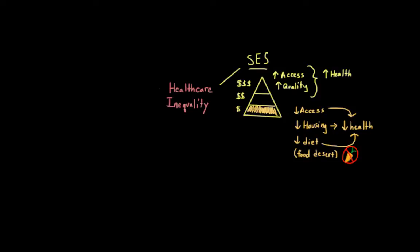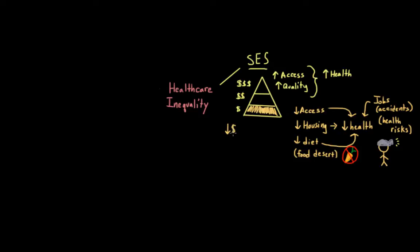Individuals with a lower SES are also more likely to take jobs that put them in dangerous environments, which could lead to accidents, or jobs that involve significant health risks. For example, miners work in very dangerous conditions and are at a high risk for conditions like black lung disease, which can result from breathing in coal dust. Additionally, individuals with a lower SES simply can't afford expensive treatments and prescriptions.